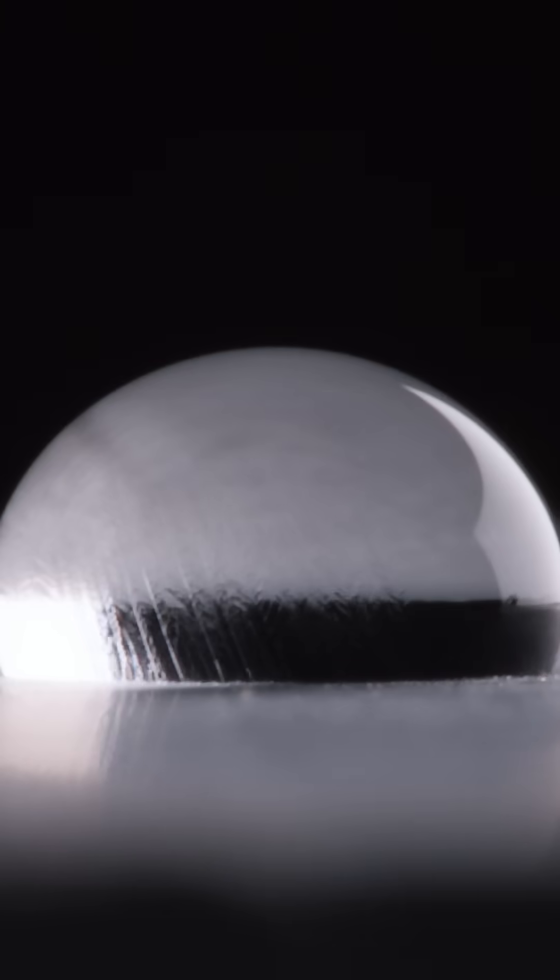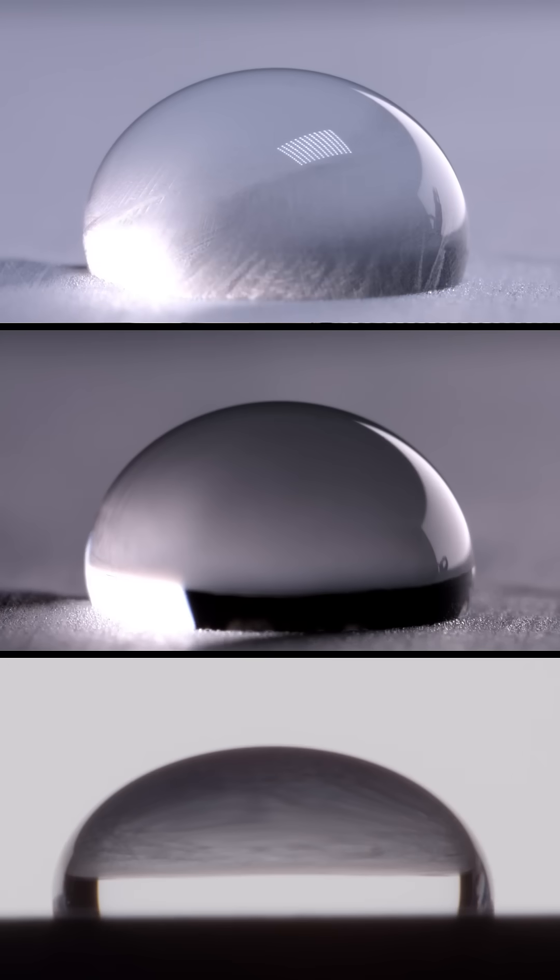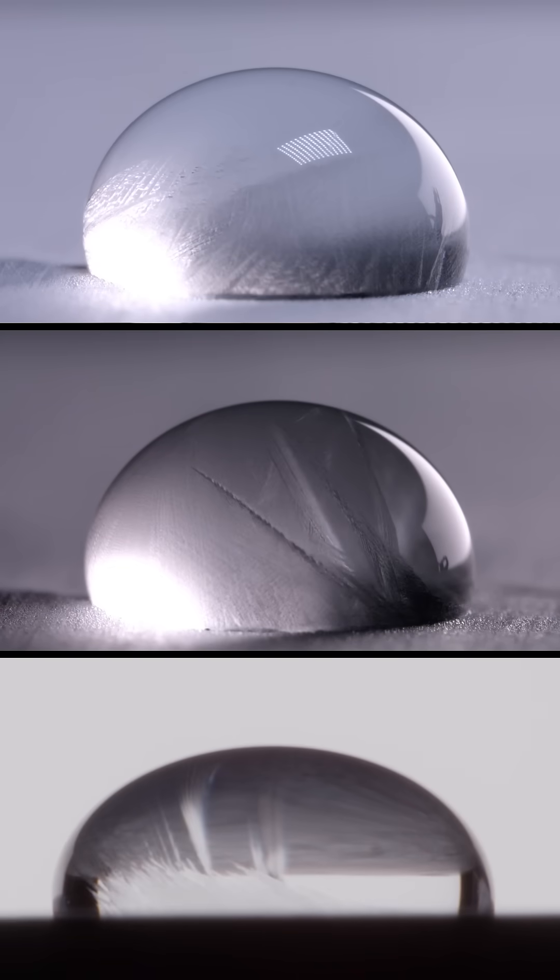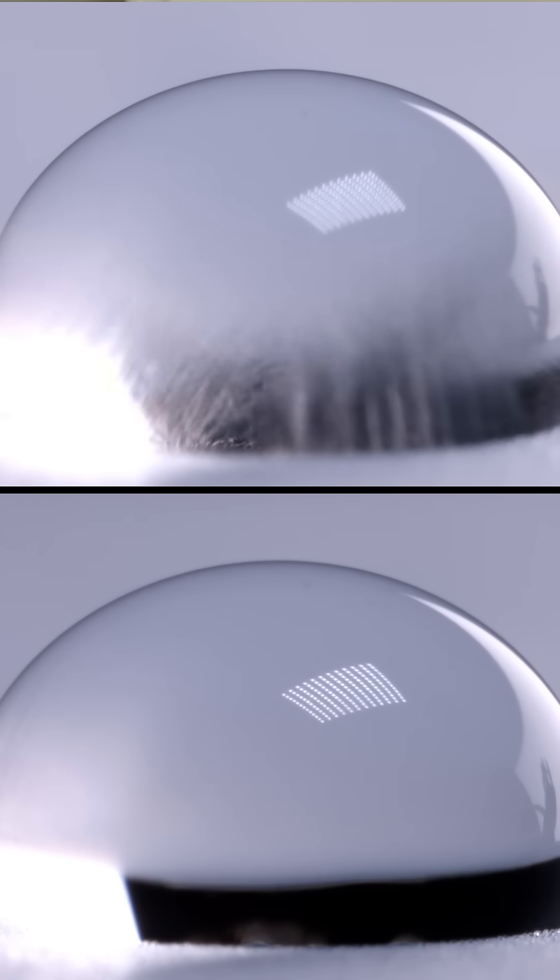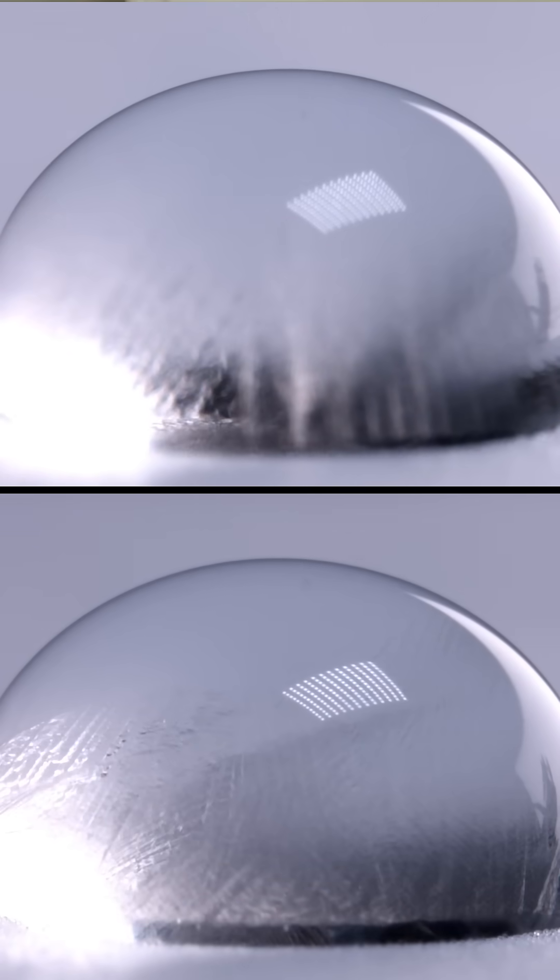So, after freezing about a thousand of these droplets, I noticed two really cool things. Thing one is that the pattern of the fractal forest was always similar, but never exactly the same, even when I froze and thawed and refroze and thawed and refroze the same droplet over and over again.